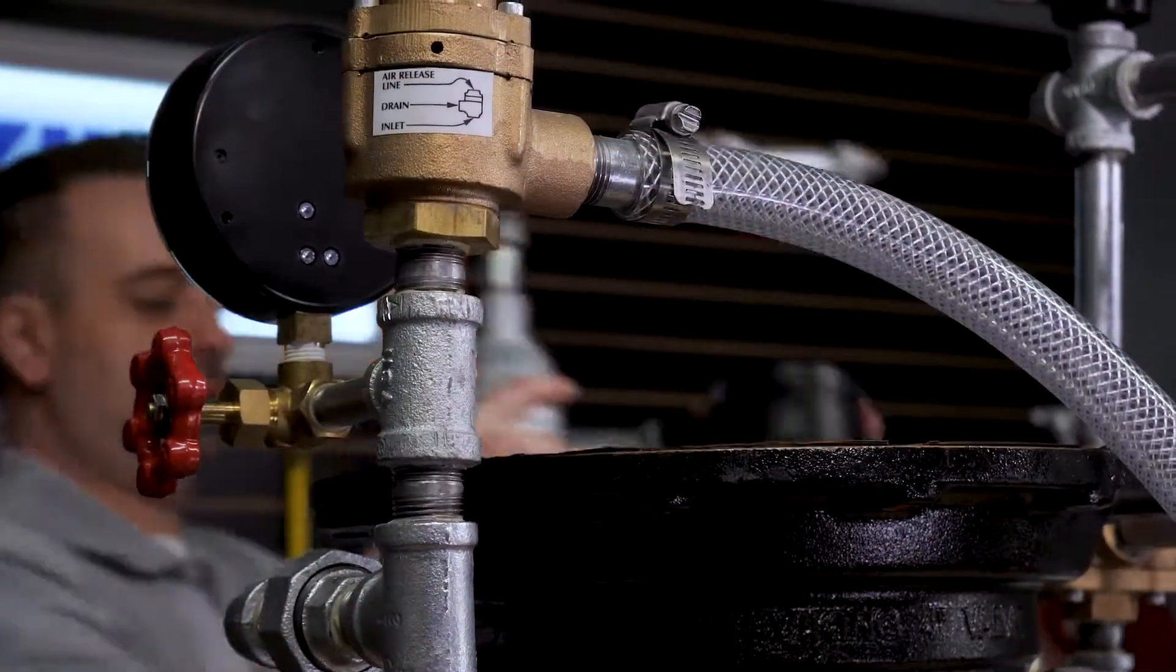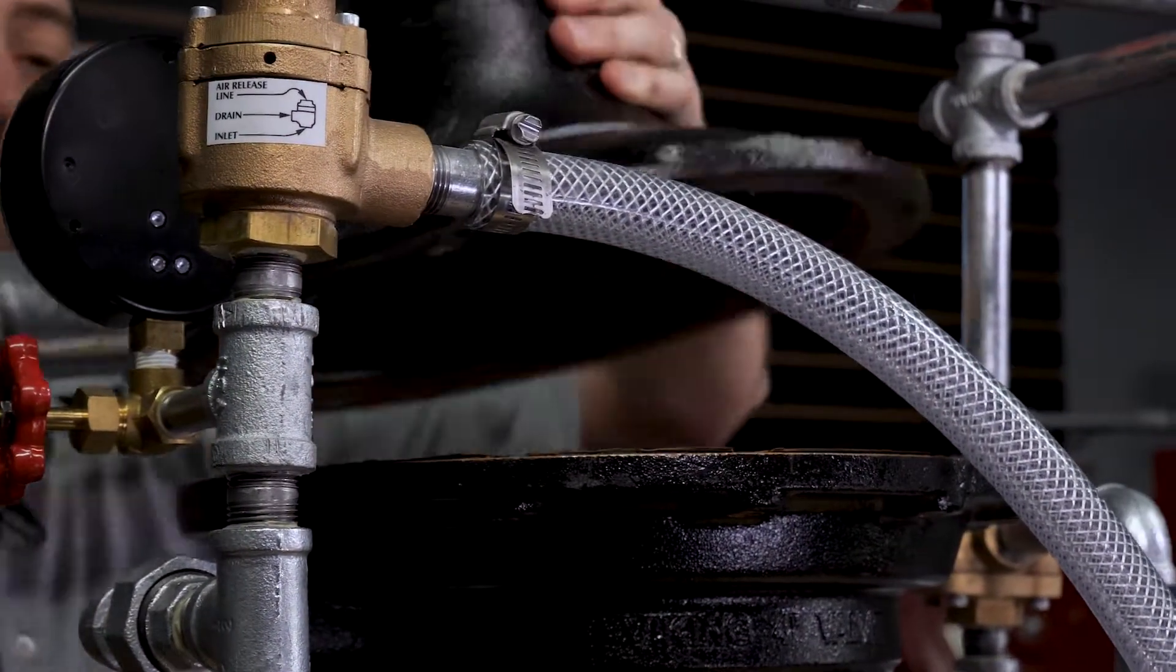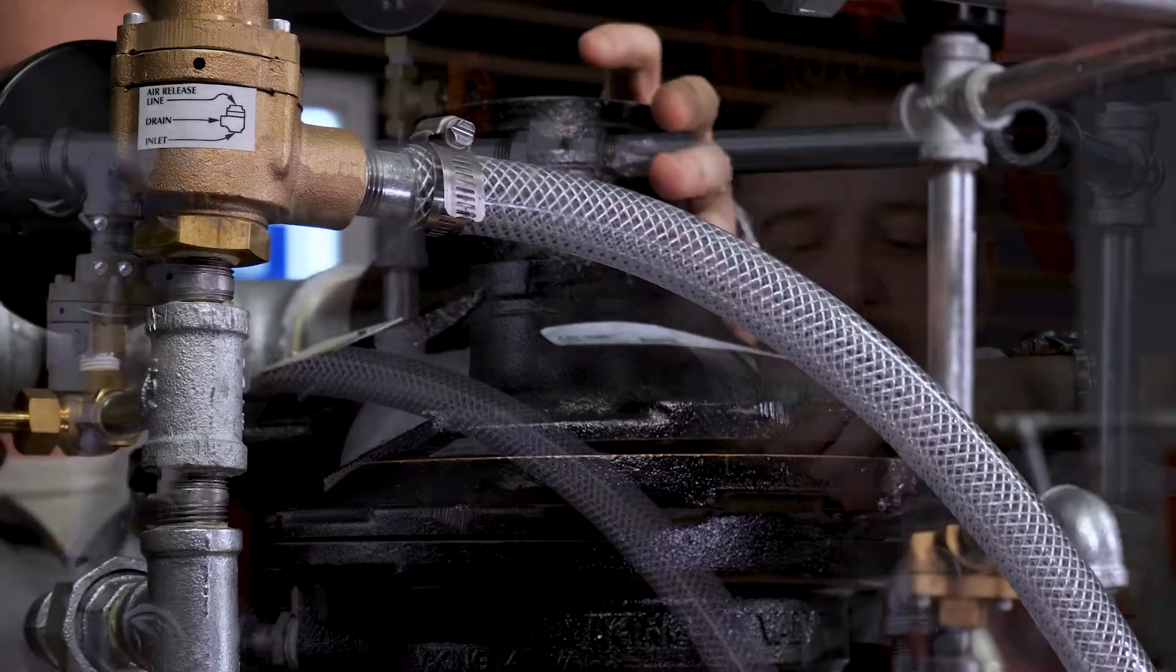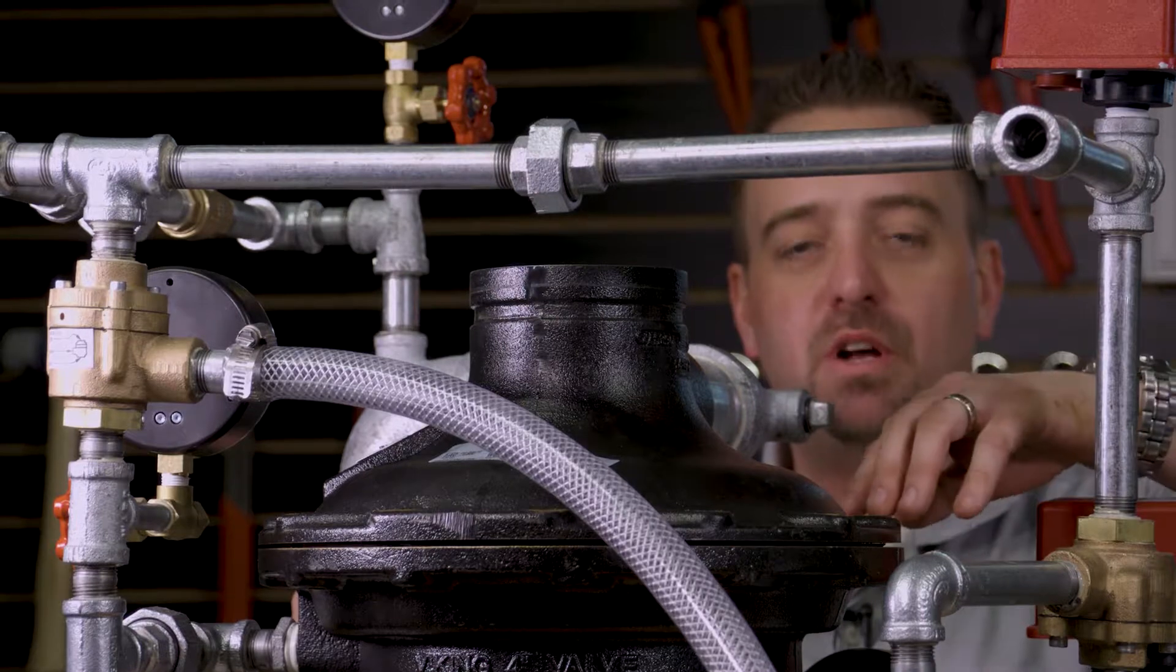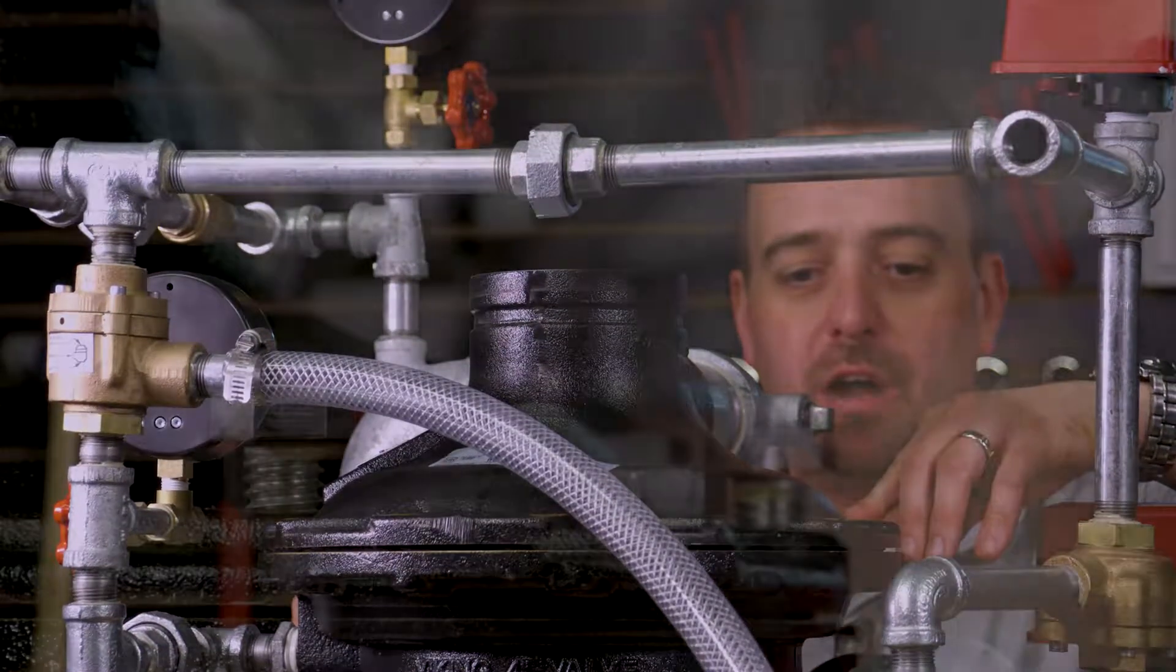When we place the cover back onto the body of the valve, we will want to make sure that the holes of the cover not only line up with the body of the valve, but line up with the internal check diaphragm as well.